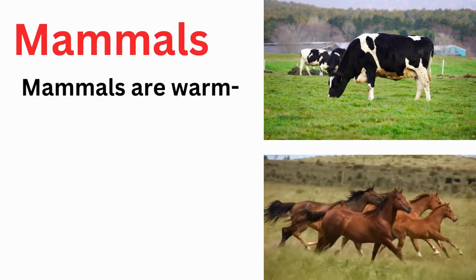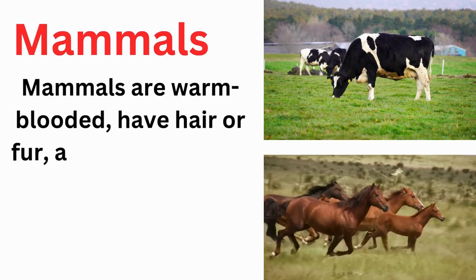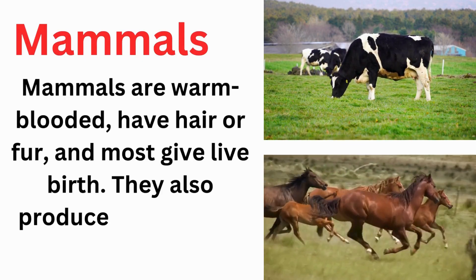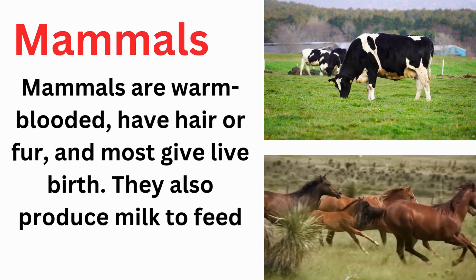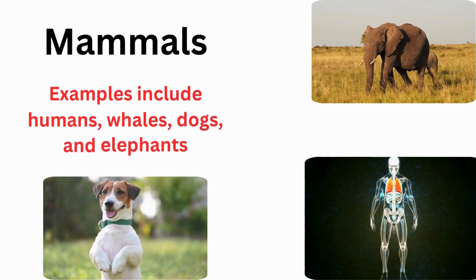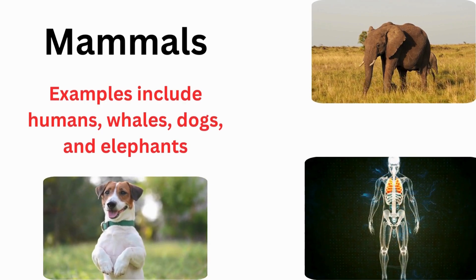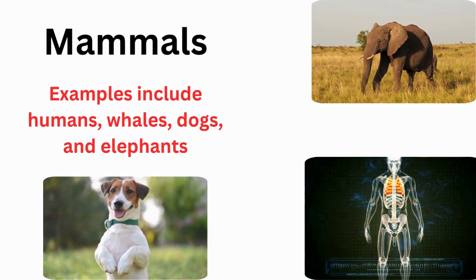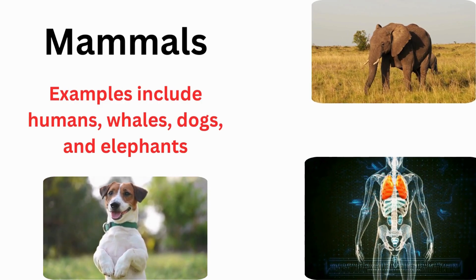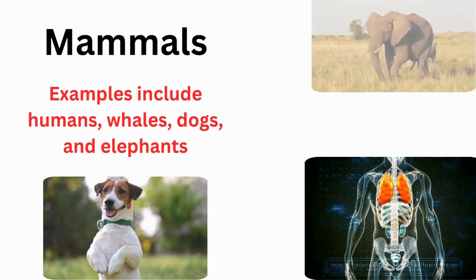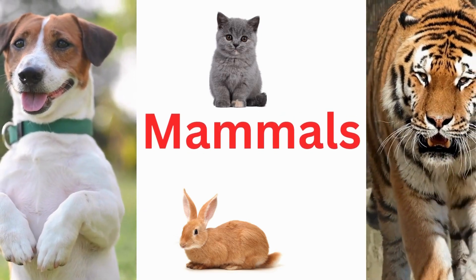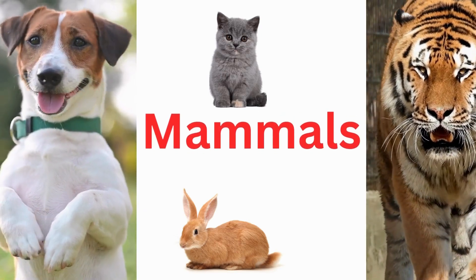Mammals are warm-blooded, have hair and fur, and most give live birth. They also produce milk to feed their young. Examples of mammals include humans, whales, dogs, and elephants.